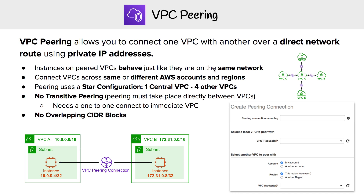You cannot have overlapping CIDR blocks. So if both VPCs had the same CIDR block — for example, both were 172.31 — we're going to have a conflict and we won't be able to talk to each other. That is VPC peering in a nutshell.